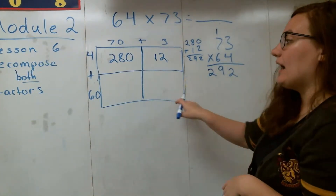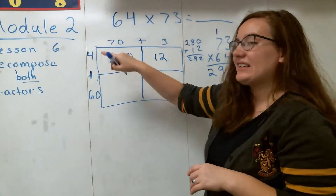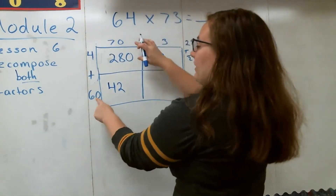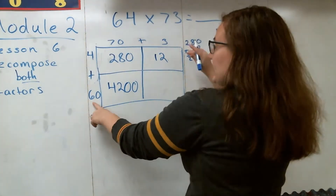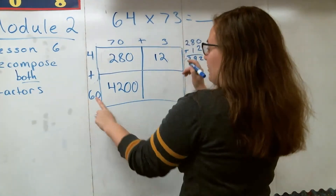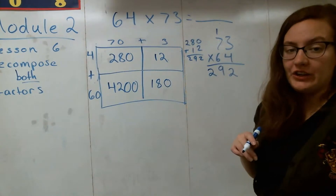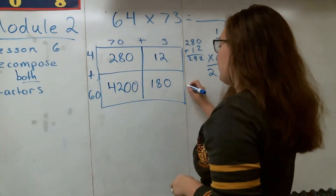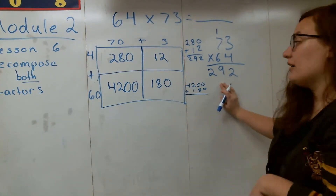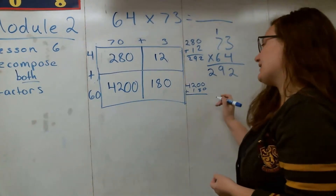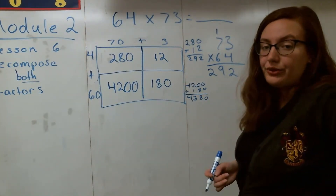For our next part, we move on to 60 times 70 and 60 times 3. For 60 times 70, I can just think of this as 6 times 7, which is 42. But remember, I have two zeros that I need to add, so I'll tack on those two extra zeros to get 4,200. Then I have to do 60 times 3: I can think of this as 6 times 3, which is 18, and then I add on a zero to get 180. So I would add together 4,200 plus 180, and my next partial product is going to be 4,380.